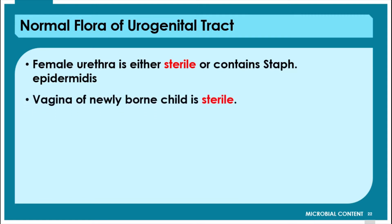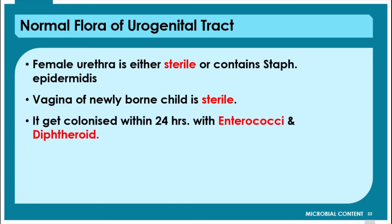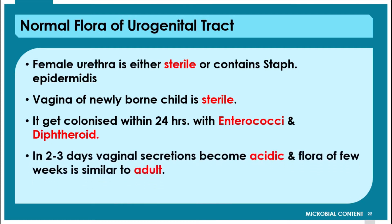The vagina of a newly born child is sterile, but it gets colonized within 24 hours with Enterococcus and Diphtheroids. In two to three days, vaginal secretions become acidic due to maternal estrogens, which induce glycogen deposition in the vaginal epithelium. This glycogen facilitates the growth of Lactobacillus.